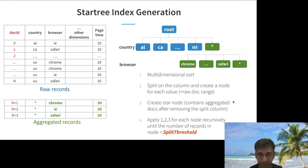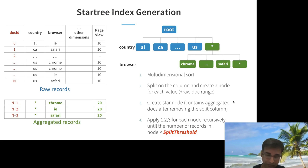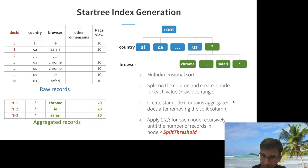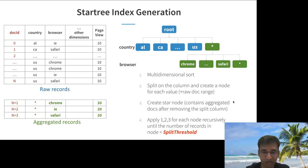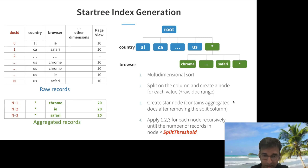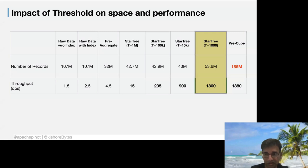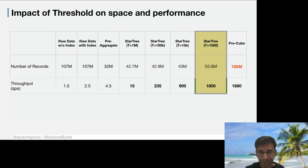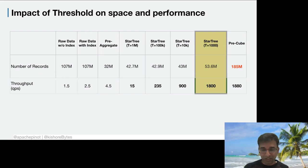A clarifying question from Cloudera: for the QPS benchmarks, the system is running queries sequentially — single-core, sequential queries — to get the maximum out of the setup. At 1,800 QPS that means 1,800 queries answered per second on a single core.